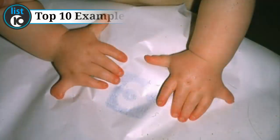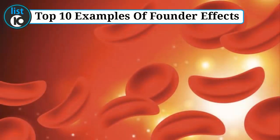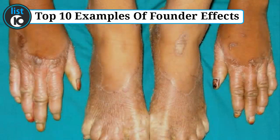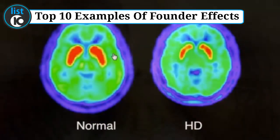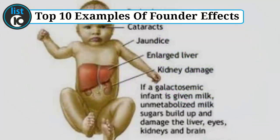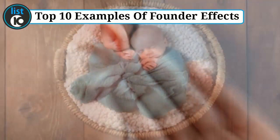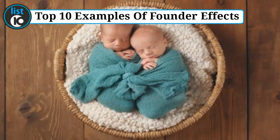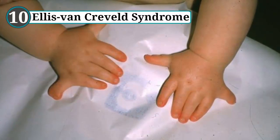Top 10 examples of founder effects. Humanity has long been drawn to the great unknown, the untamed wilderness of unexplored lands. Often that call is answered by a small group intent on setting up a colony and starting a new life. However, intermarriage and the suspicion of outsiders often lead to a lack of genetic diversity, resulting in what are known as founder effects. Here are 10 examples of these unexpected occurrences.